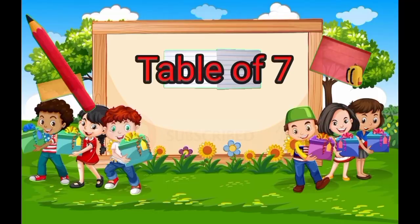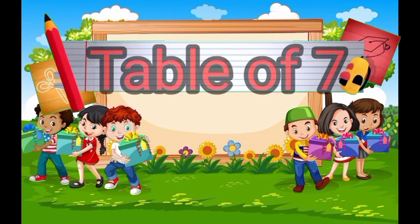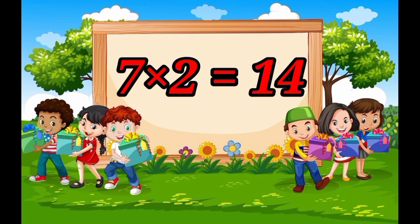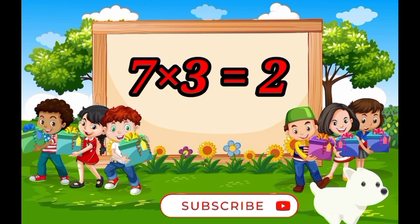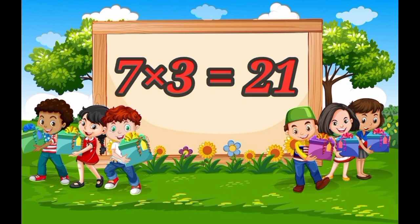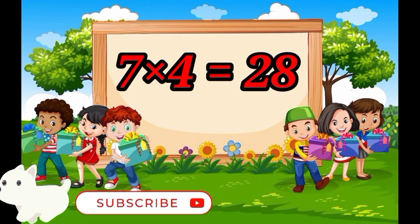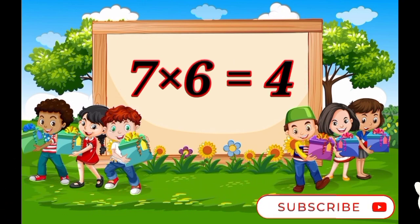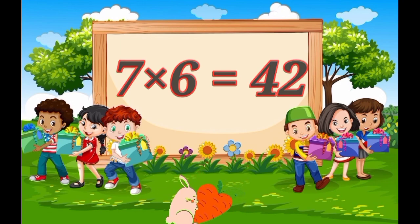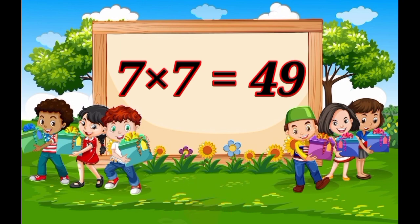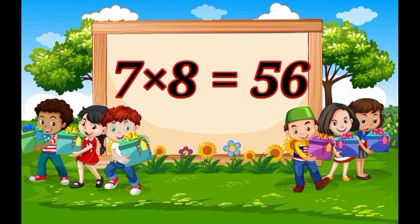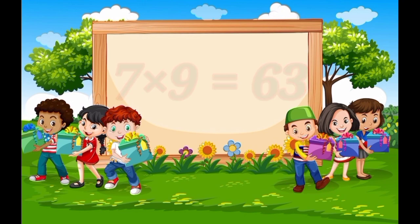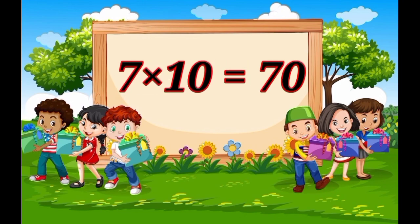Seven ones are seven, seven twos are fourteen, seven threes are twenty-one, seven fours are twenty-eight, seven fives are thirty-five, seven sixes are forty-five, seven sixes are forty-two, seven sevens are forty-nine, seven eights are fifty-six, seven nines are sixty-three, seven tens are seventy.